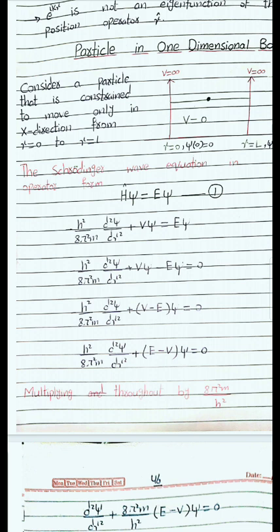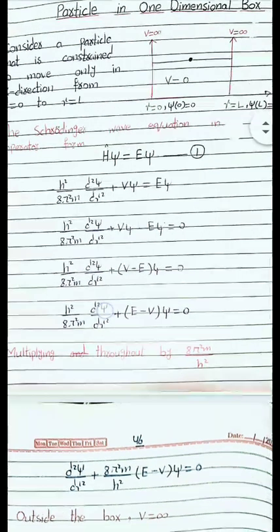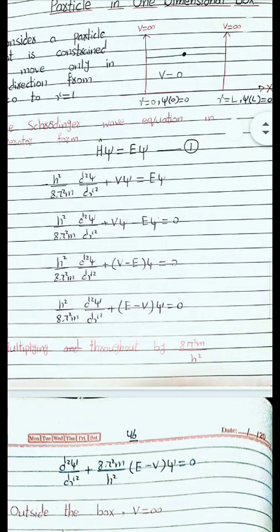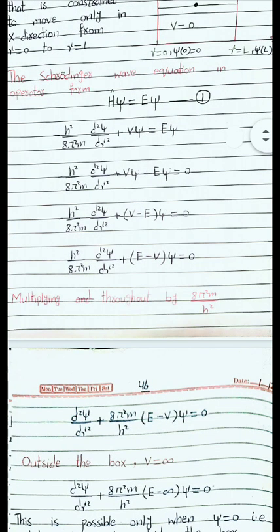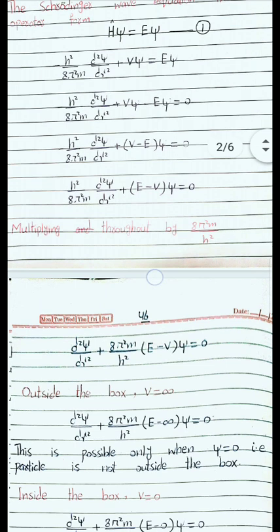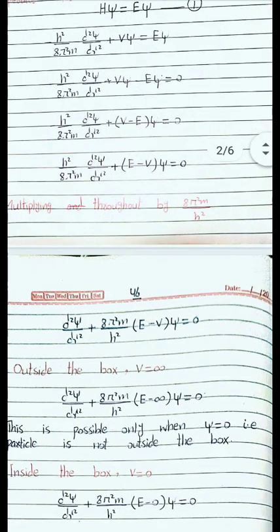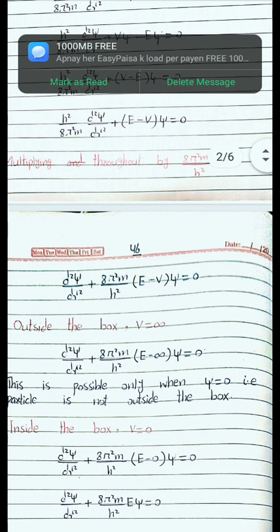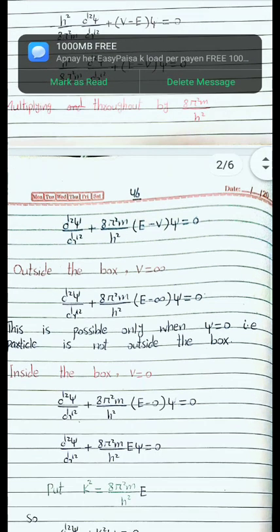Multiplying throughout by 8π²m/h², we get: d²ψ/dx² + (8π²m/h²)(E − V)ψ = 0. Now we apply the boundary conditions. First, when V = ∞ outside the well, the wave function is zero there. Inside the well, V = 0.